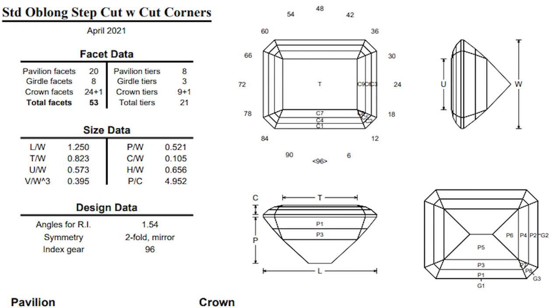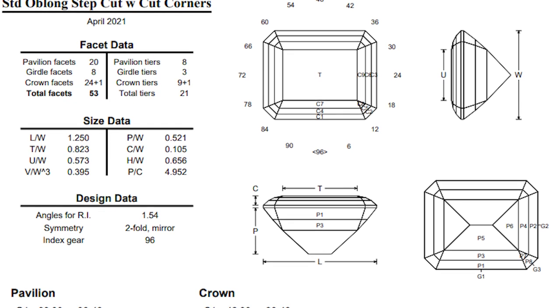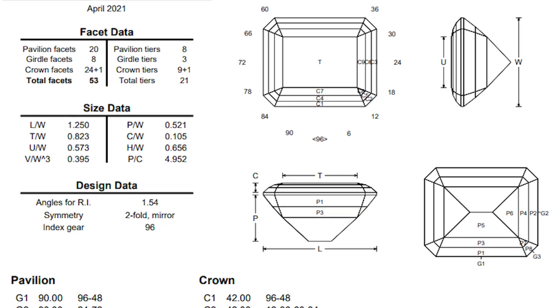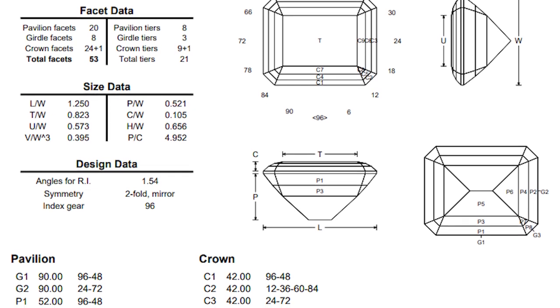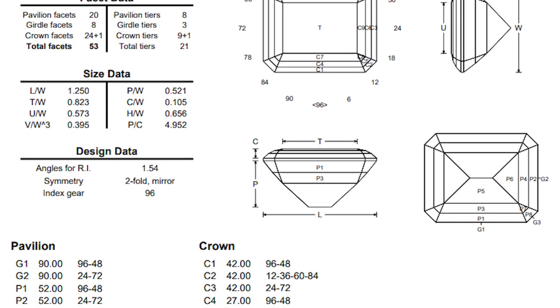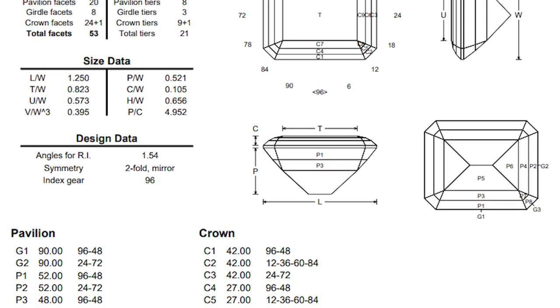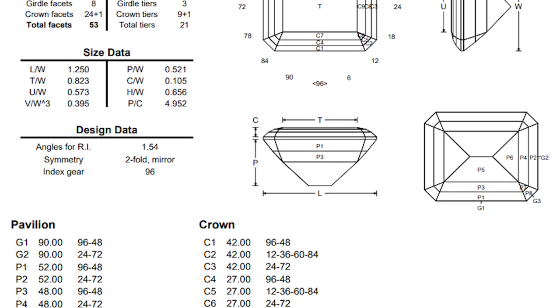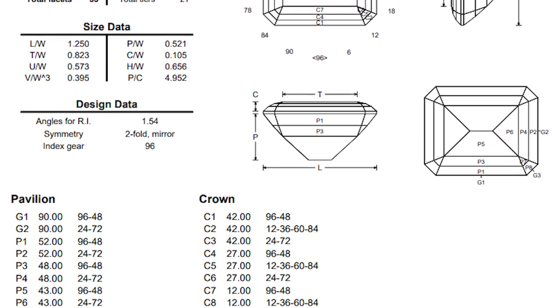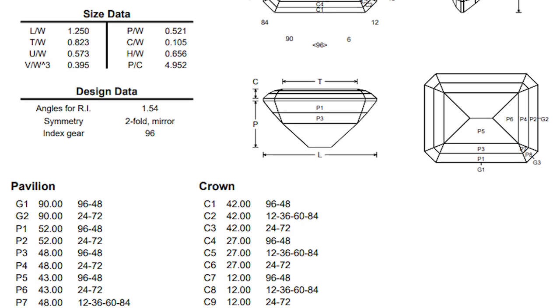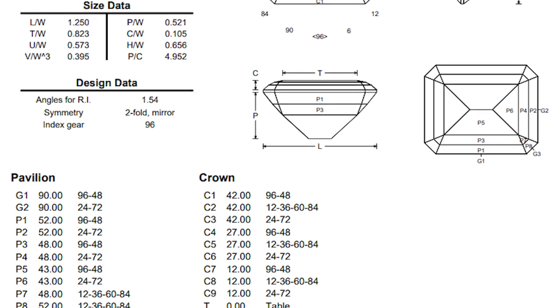Here is the design I will use. I got it from the Australian Faceters Guild website. Note that when cutting a rectangle design with step cuts, you do not have to follow the length to width ratio in the instructions. You can make a rectangle design with step cuts any length and pretty much any width you want. But this only works if there are step cuts. Even though these instructions call for a length that is 1.25 times the width of the final gemstone, you can ignore that ratio and make the length as long as you want.